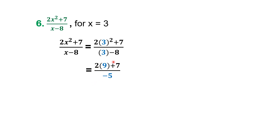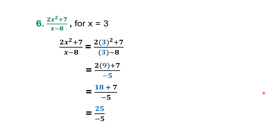Continuing to solve the numerator: 2 times 9 gives us positive 18. 18 plus 7 gives us 25. So the numerator is positive 25 and the denominator is negative 5. Simplify the fraction: 25 divided by negative 5 gives us negative 5.